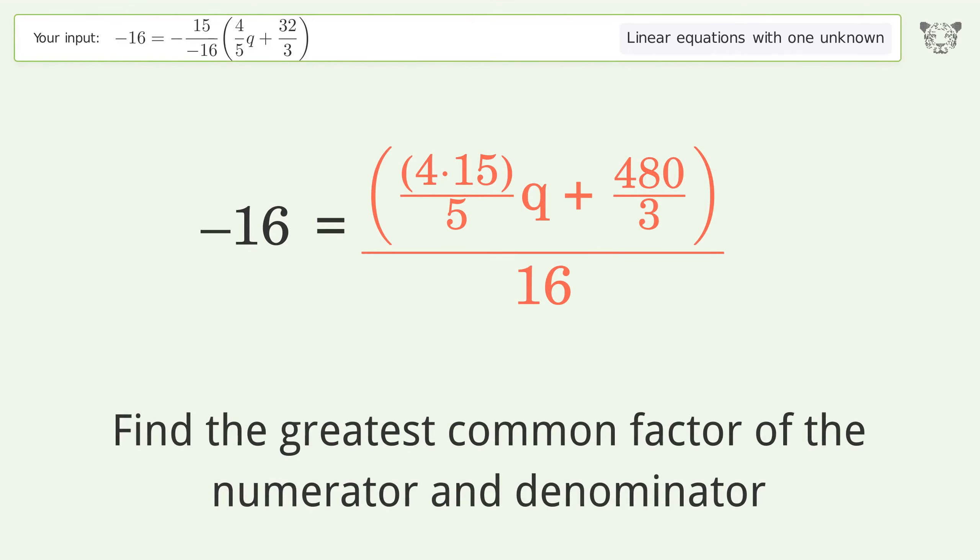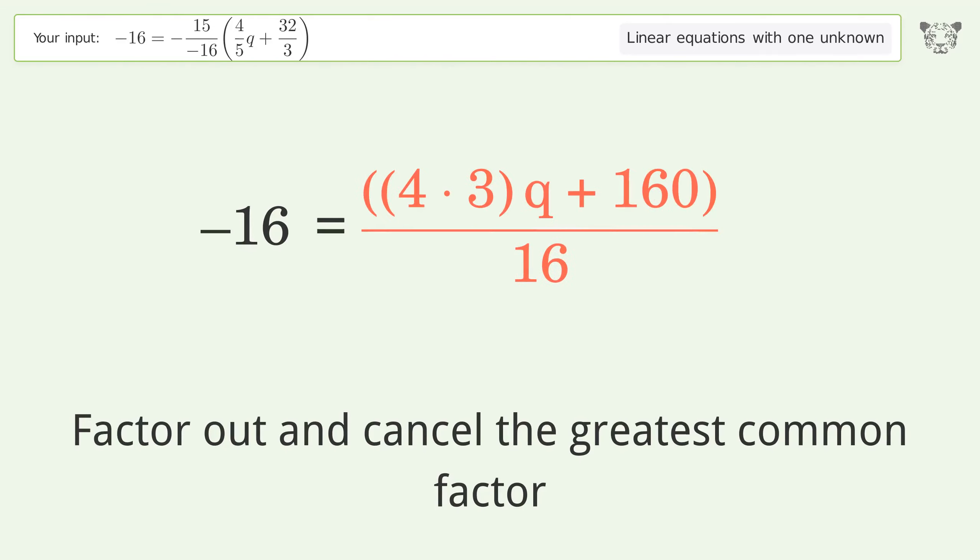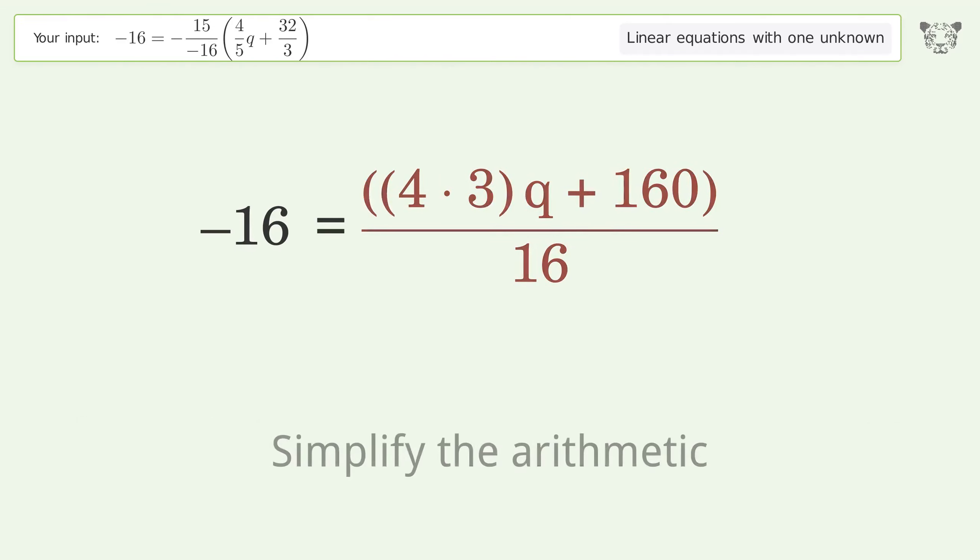Find the greatest common factor of the numerator and denominator. Factor out and cancel the greatest common factor. Simplify the arithmetic.